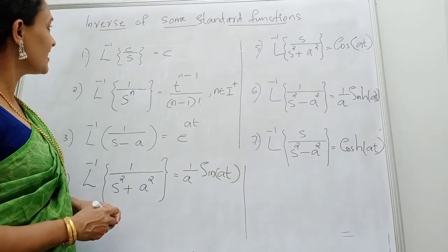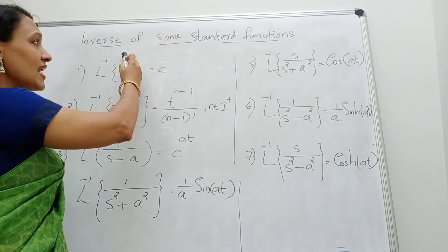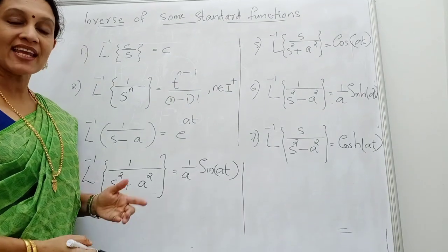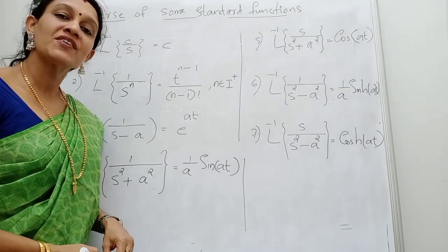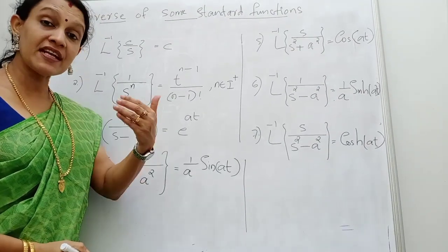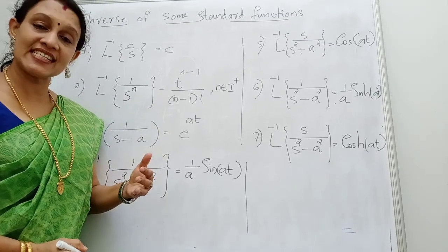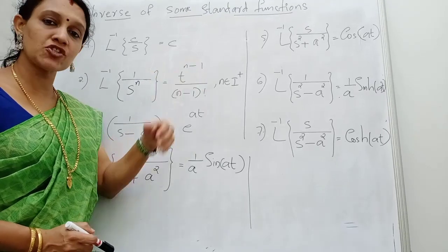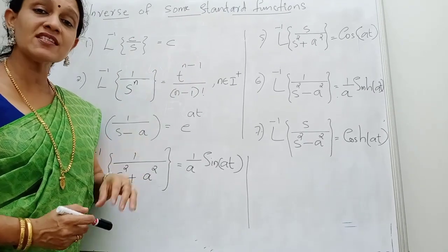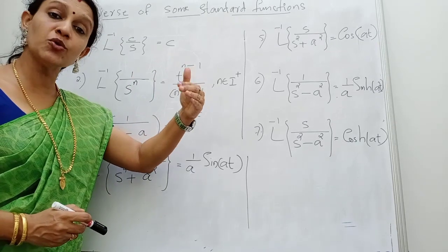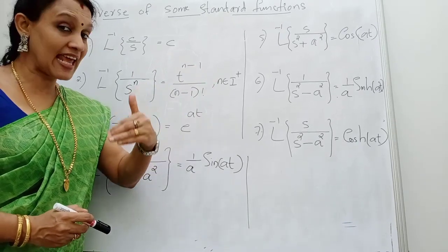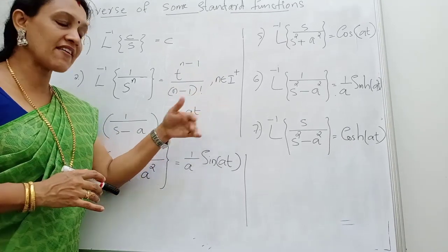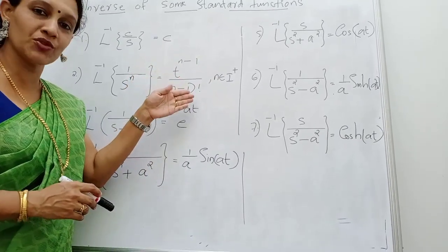Now we are considering the inverse Laplace transform of some standard functions. In Laplace transform, we considered seven different functions. Here also we are considering seven such results. In the previous results, when I give you the right-hand side, you should be able to say the left-hand side. So we are writing all these seven results.